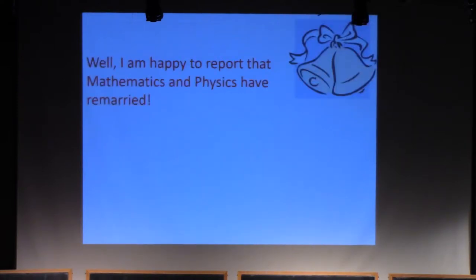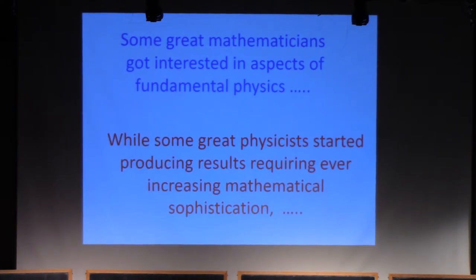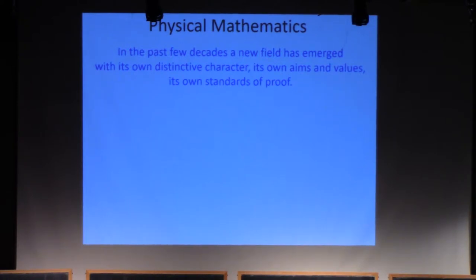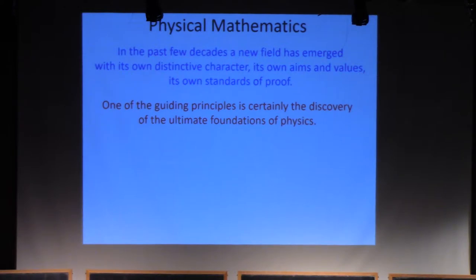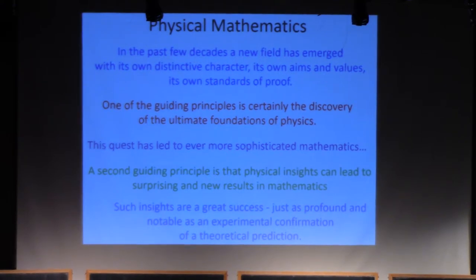I'm happy to announce that mathematics and physics have remarried. The relationship has altered somewhat. A sea change began in the 1970s when some great mathematicians got interested in aspects of fundamental physics, and at the same time, some great physicists started producing results requiring ever-increasing mathematical sophistication. After these decades of ferment, I would say a new field has emerged with its own distinctive character, its own aims and values, and its own standards of proof. One of the guiding principles is certainly the discovery of the ultimate foundations of physics, Hilbert's sixth problem generously interpreted. A second guiding principle is that physical insights can lead to surprising and new results in mathematics, and such insights are just as profound and notable as an experimental confirmation of a theoretical prediction.